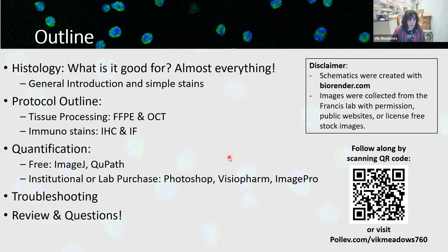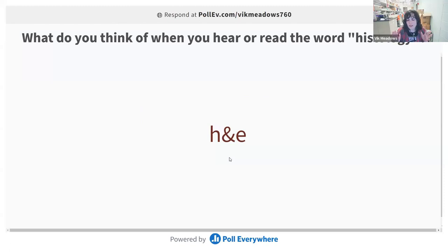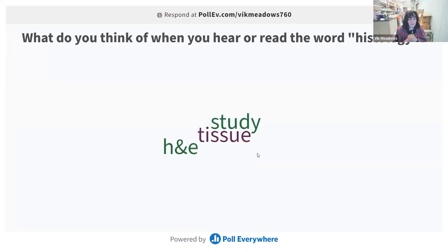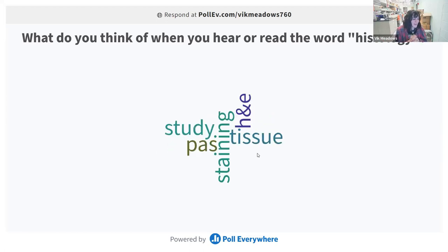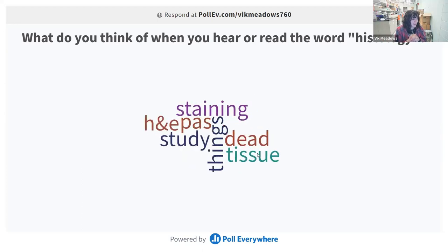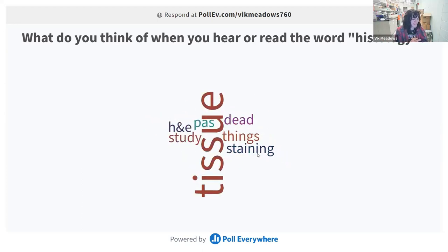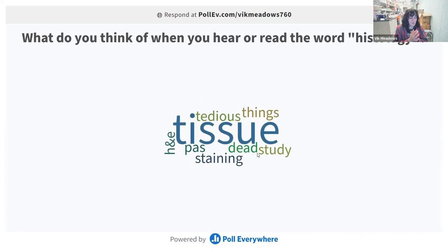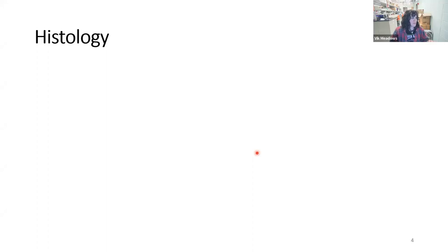My first order of business: what do you think of when you read or hear the word 'histology'? I want to gauge where the audience is. We're seeing H&E — a very common, considered-simple stain, but if you've done H&E you can always have issues with it. Also PAS staining, dead cells, definitely tissue. So we're all thinking about how this can be applied to our research, because if we're trying to understand molecular goings-on in our cells we need to look at the bigger picture.